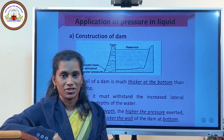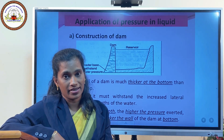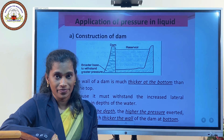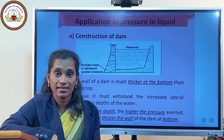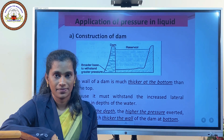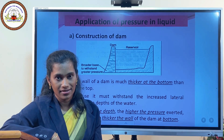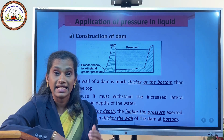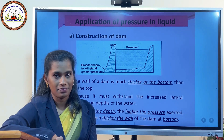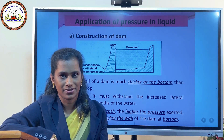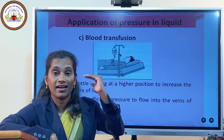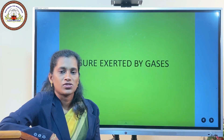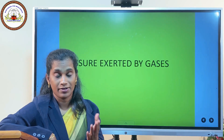This information about liquid pressure is used in various applications. For example, it is used in the construction of dams. Since pressure increases with depth, dams are constructed to be broad towards the bottom so they can withstand the higher pressure exerted by the water. Another example: during blood transfusion the bottle is hung at a higher position to enable the flow of the fluid.